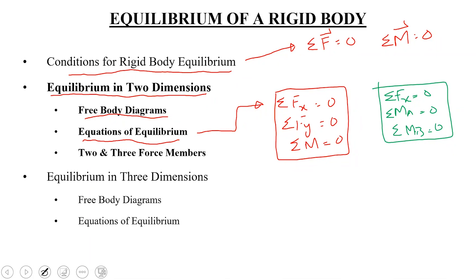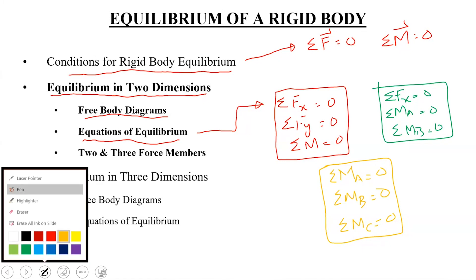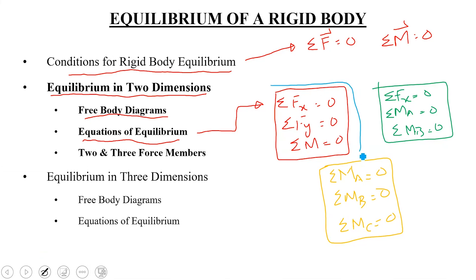The third set of equations, which is very rarely used, uses three moment equations about three different non-collinear points on the rigid body: summation Ma equal to 0, summation Mb equal to 0, and summation Mc equal to 0, where points A, B, and C do not lie along the same line. These are the three different sets of equilibrium equations used to determine support reactions. Most commonly — probably 99% of problems — you will use the first set: summation Fx, summation Fy, and summation M.